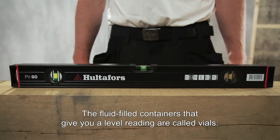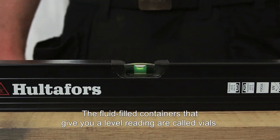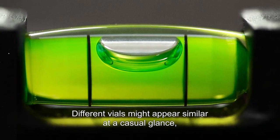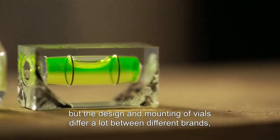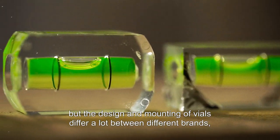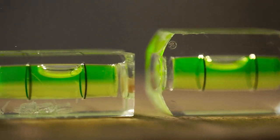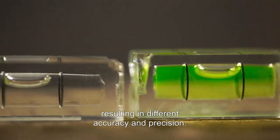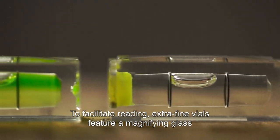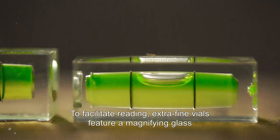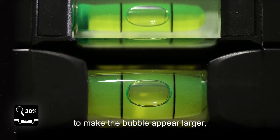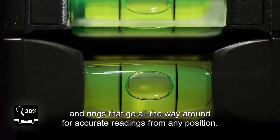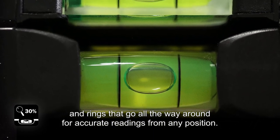The fluid-filled containers that give you a level reading are called vials. Different vials might appear similar at a casual glance, but the design and mounting of vials differ a lot between different brands, resulting in different accuracy and precision. To facilitate reading, extra fine vials feature a magnifying glass to make the bubble appear larger, and rings that go all the way around for accurate readings from any position.